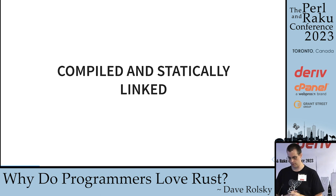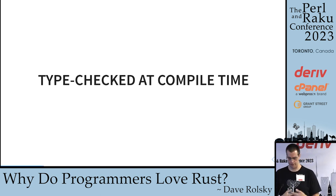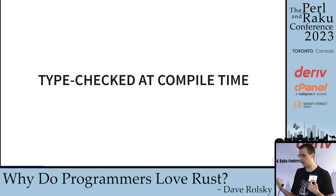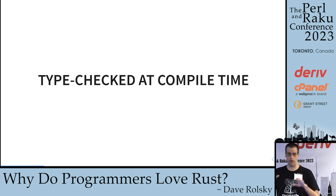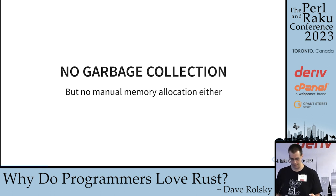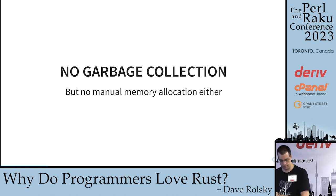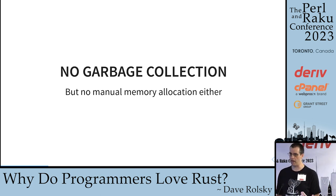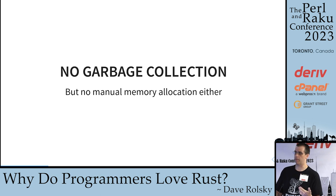It's type-checked at compile time with a pretty powerful type system. We'll look at some examples of what this can do for you. One really interesting fact is it has no garbage collection, but it also doesn't have any manual memory management either — we'll talk a little about that. Most things go on the stack by default, but you can opt to put things on the heap. You can even replace the global allocator, and you can also write code that doesn't allocate memory at runtime at all.